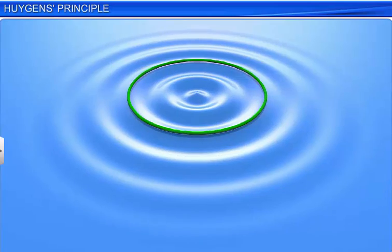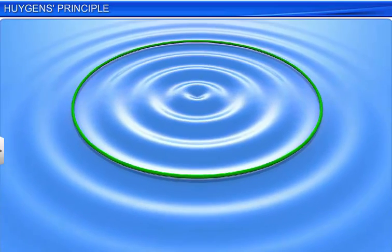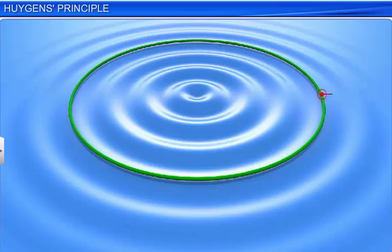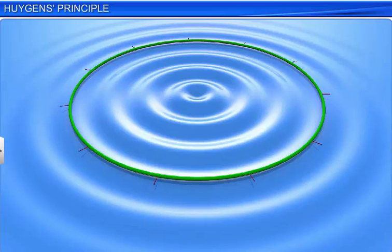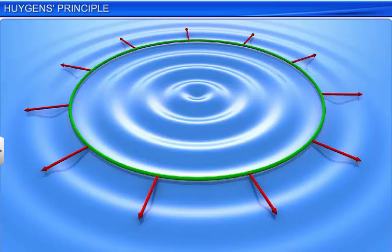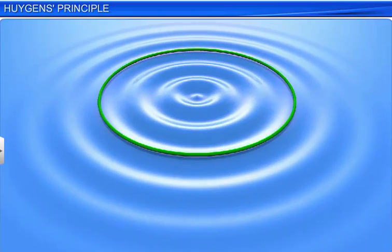The propagation of the waves can be understood by studying the propagation of wave fronts. An outward normal drawn at any point on the wave front represents the direction of the wave at that point. In terms of energy, the energy of the wave propagates in a direction perpendicular to the wave front. The speed at which a wave front travels is the speed of the wave.